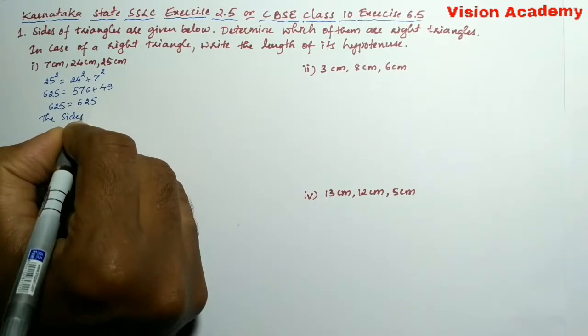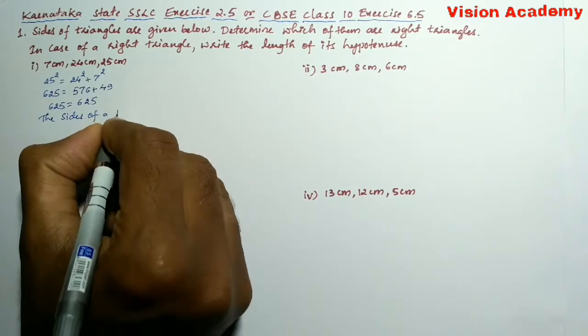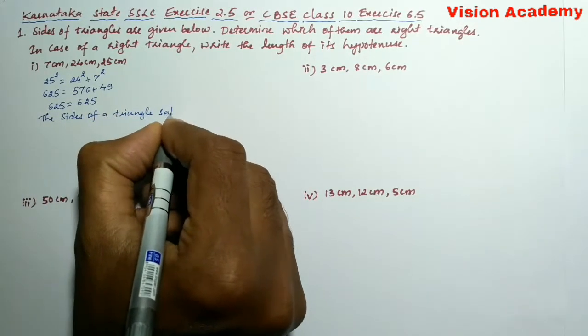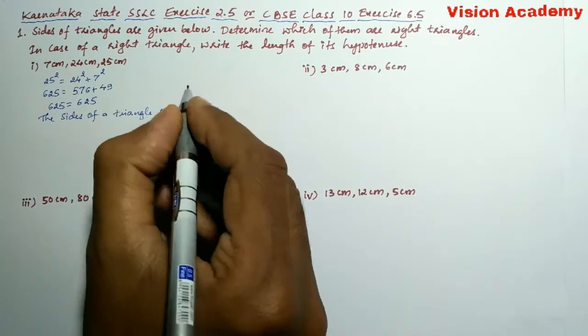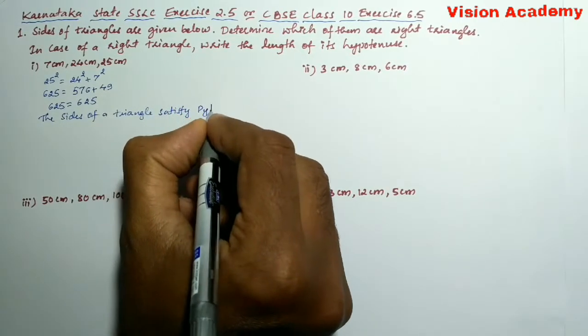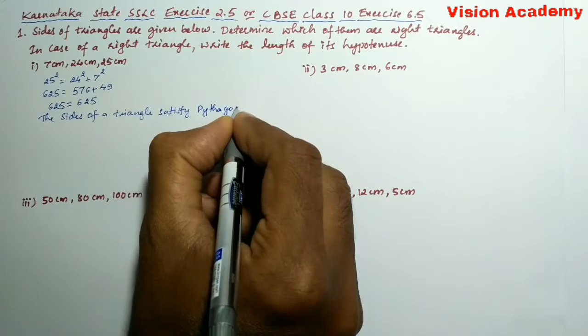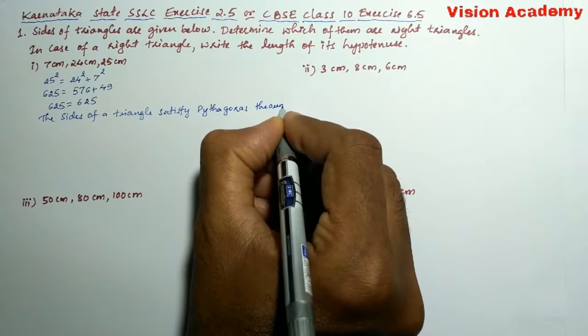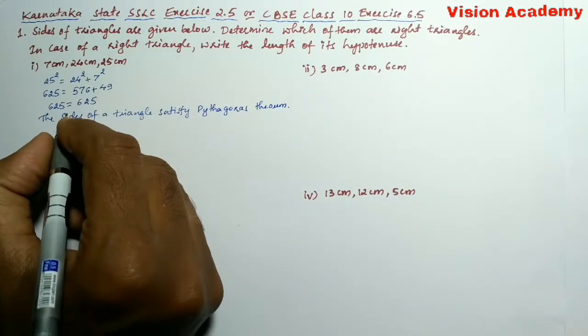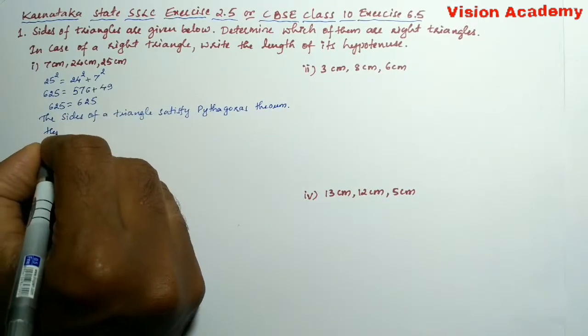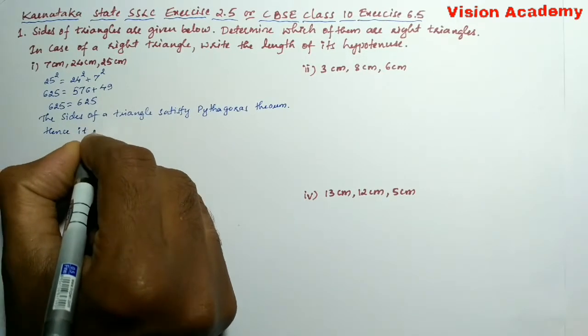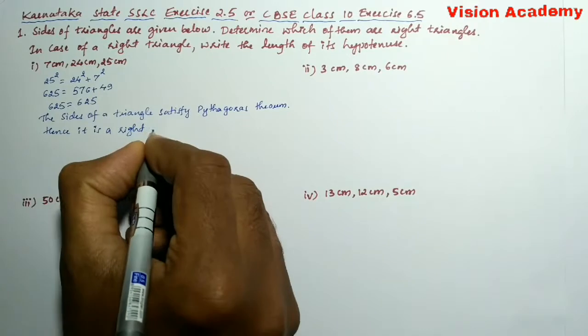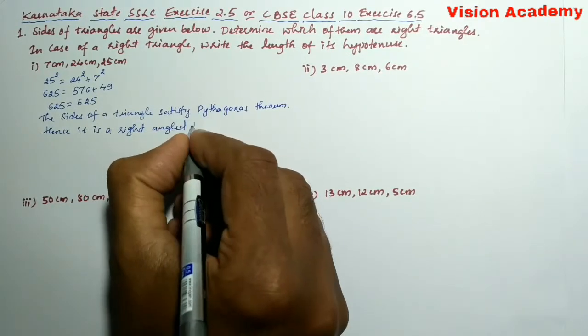The sides of the triangle satisfy Pythagoras theorem. Hence it is a right angled triangle.